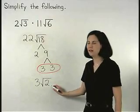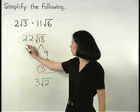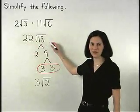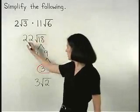Finally, don't forget about the 22 that was multiplied by the square root of 18. So bringing down the 22.